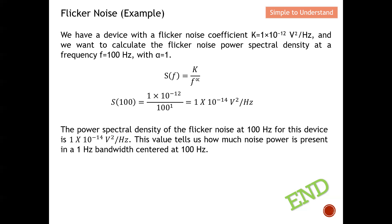In summary, I have discussed three types of noise: thermal noise, shot noise, and flicker noise. Flicker noise dominates at low frequency. At higher frequency, thermal noise and shot noise become more significant; both are considered flat, meaning they don't change with frequency. For flicker noise, as frequency increases, the noise reduces.